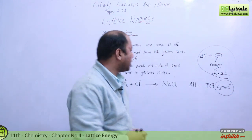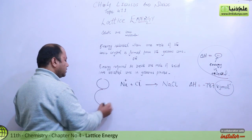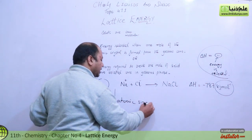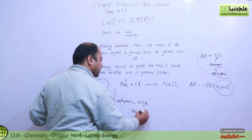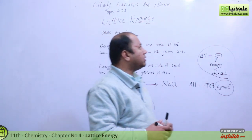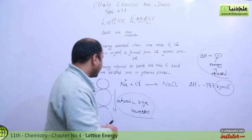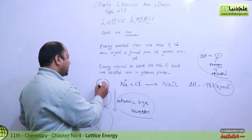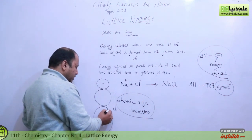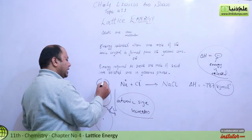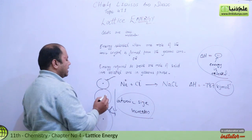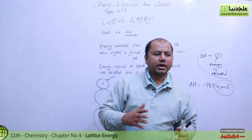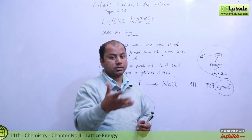Now, if you think about groups in the periodic table, atomic size increases going down a group. When atomic size increases, the nucleus is farther from the outer shell. So if an electron is added to a smaller atom, the nucleus is closer and more energy is released. In a larger atom, the nucleus is farther away, so less energy is released.